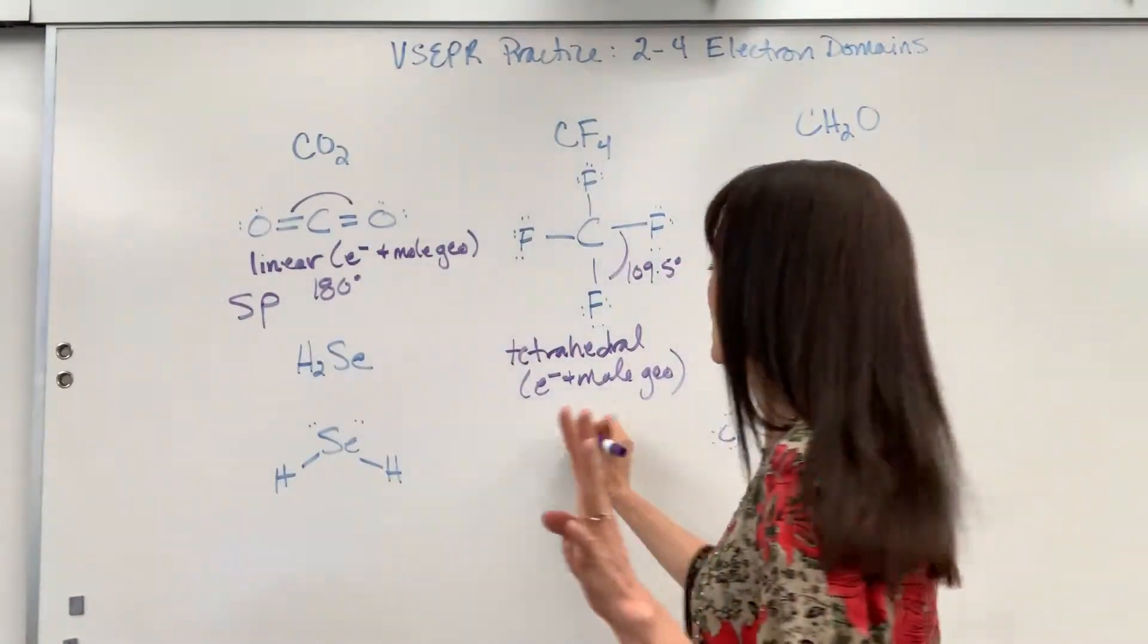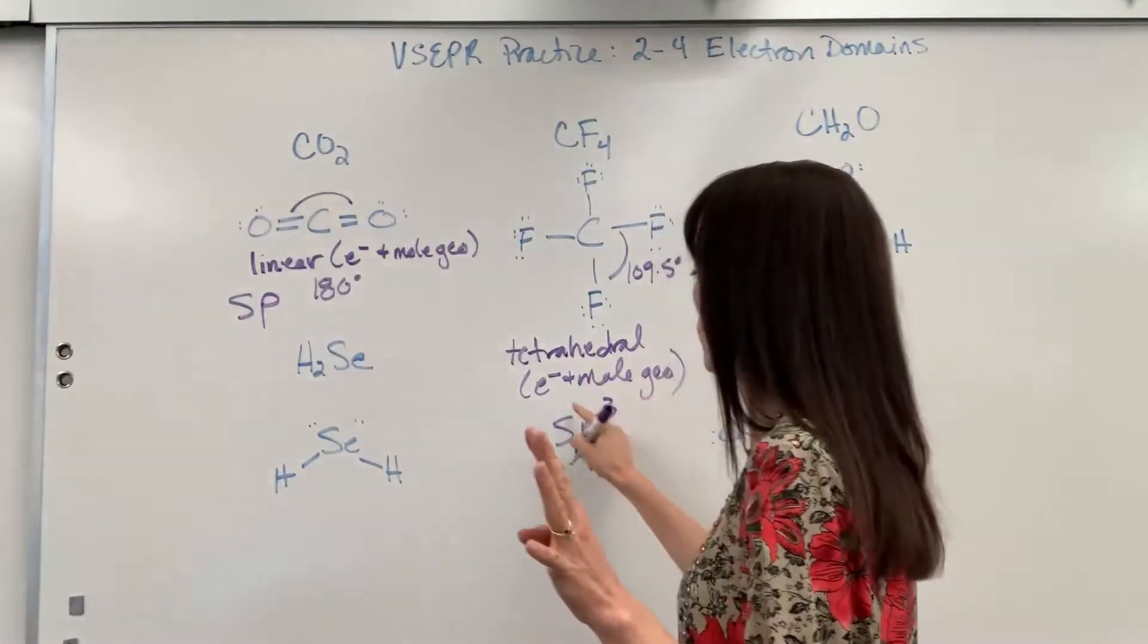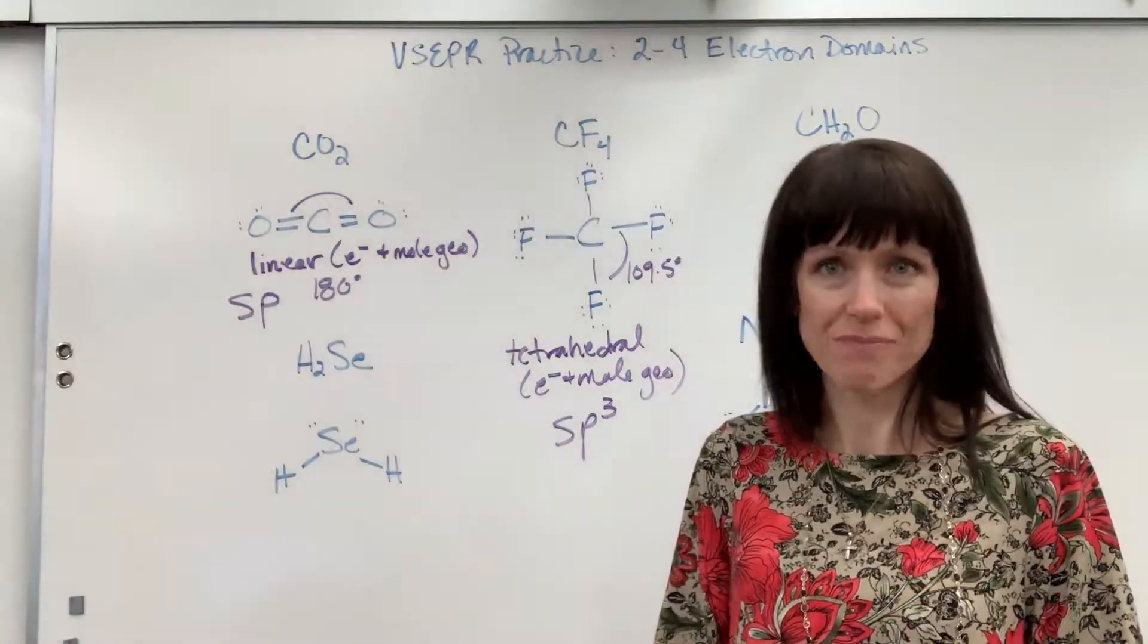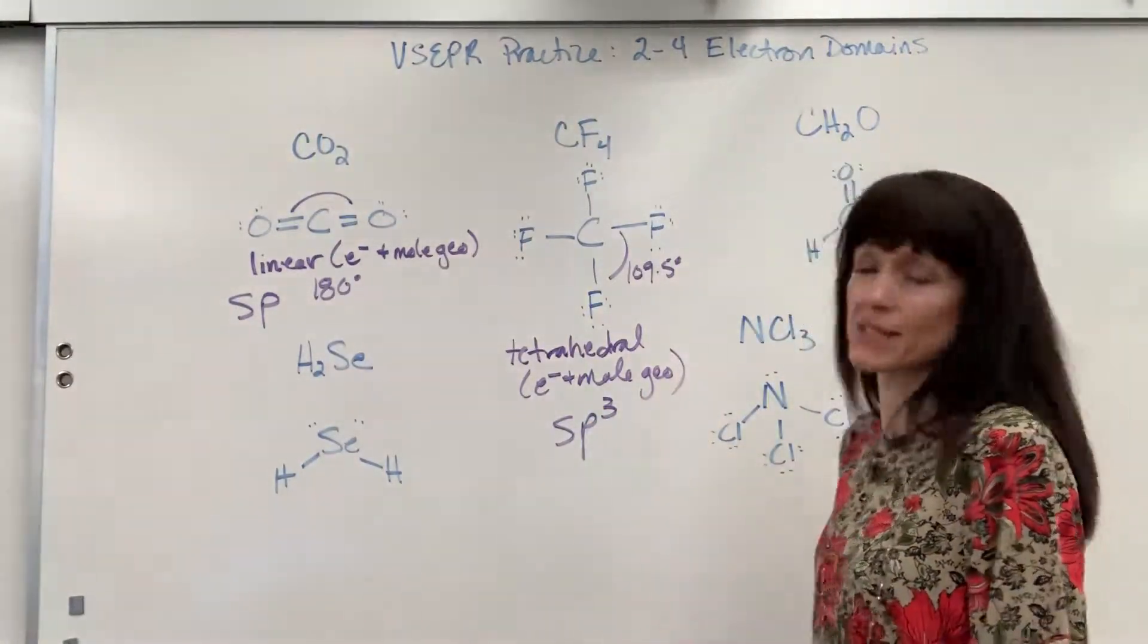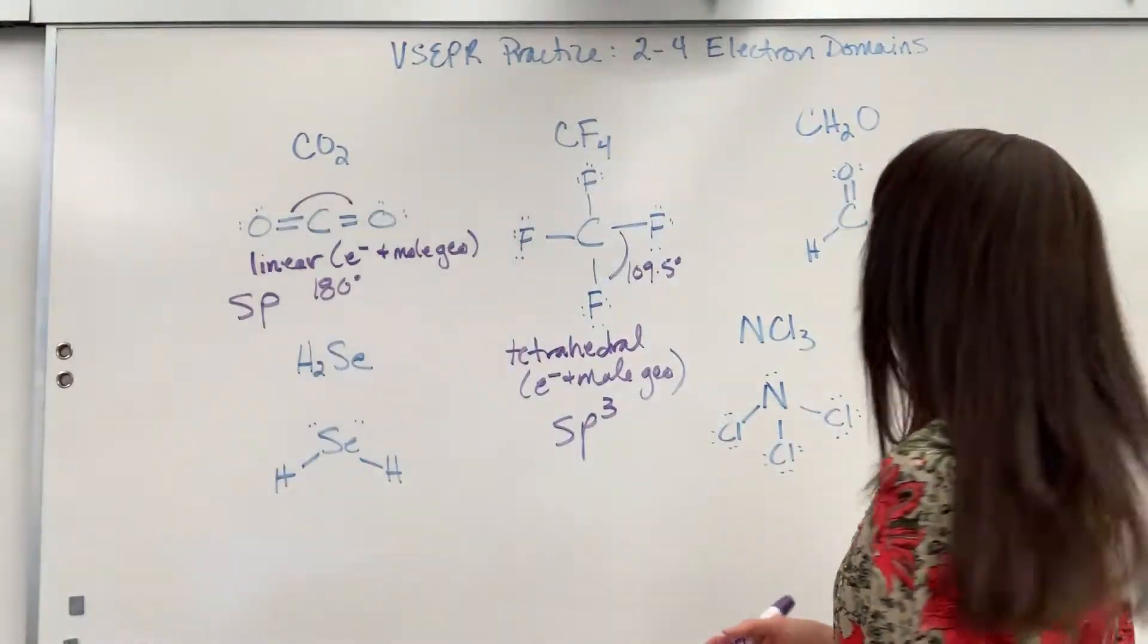Hybridization. So four electron domains. SP3. One plus three gives us four. Remember P, the maximum exponent on that is a three.